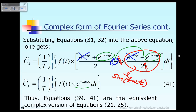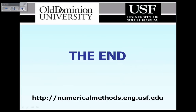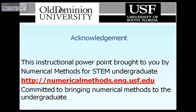To summarize: any periodic function f(t) can be expressed in terms of the complex constant C̃_k times e raised to the power iKω₀t. The complex constant C̃_k can be computed based on equation 41. That concludes this lecture. Thank you.